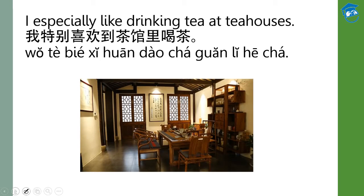He also continues by saying: I especially like drinking tea at tea houses. In Chinese, he says 我特别喜欢到茶馆里喝茶. You have learned all the words here again, but this is a new usage. One is 特别. 特别 means special. As explained previously, 特 means special, but to make it a word to use, we say 特别. This describes the verb that follows it, which is 喜欢.